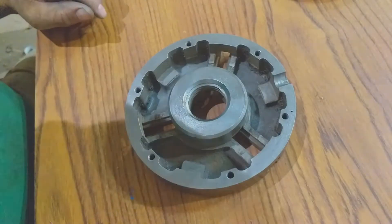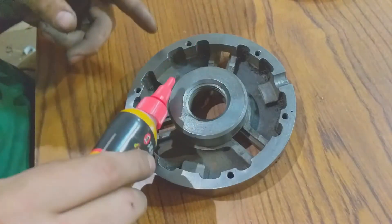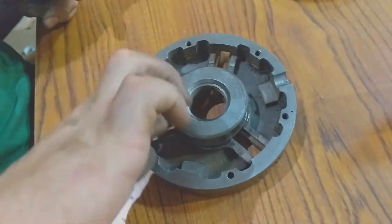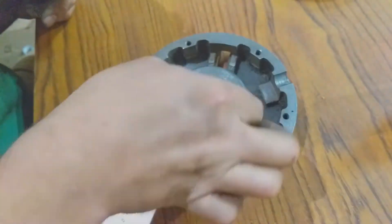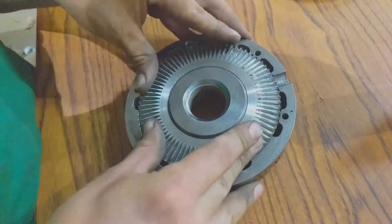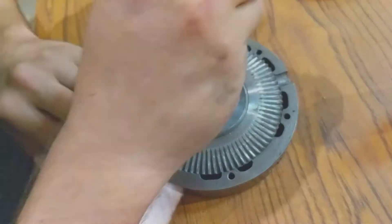This is the chuck from the Atlas TH-54 lathe that I am working on right now. I'm just reassembling it after taking it apart and working on it. All I really did was I took a file to all the nicks and burrs that were all over it.